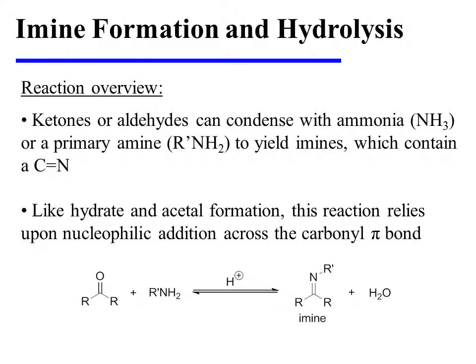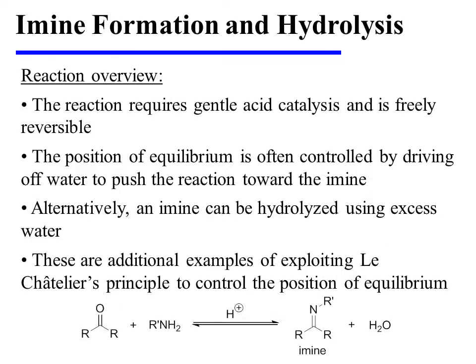Ketones or aldehydes can condense with ammonia or a primary amine to yield imines, which contain a carbon-nitrogen double bond. Like hydrate and acetal formation, which we have seen in the previous videos, this reaction relies upon nucleophilic addition across the carbonyl pi bond. The reaction requires gentle acid catalysis and is freely reversible, much as we saw with hydrate and acetal formation.